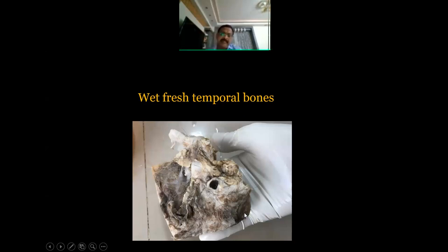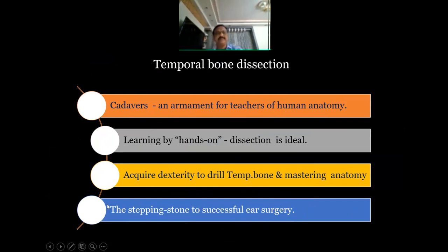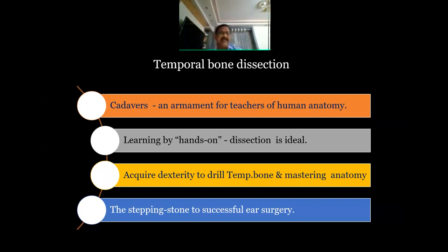Once you get used to instruments and master some techniques, move on to wet fresh temporal bone dissection. Getting a wet temporal bone is not easy these days for many reasons — it depends on your connections with forensic or anatomy departments. You first do a dry bone dissection, followed by wet temporal bone. The bone dimensions must be correct so it fits properly into the temporal bone holder.